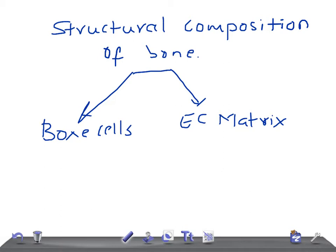The bone cells — I'll talk about them in detail in another video — but briefly, we have three different bone cells: osteoblasts, osteocytes, and osteoclasts.